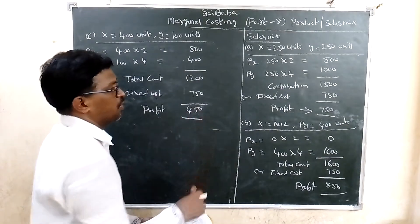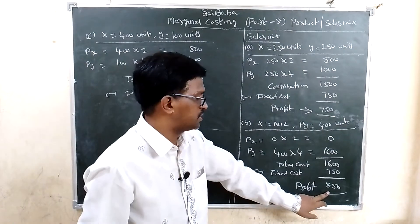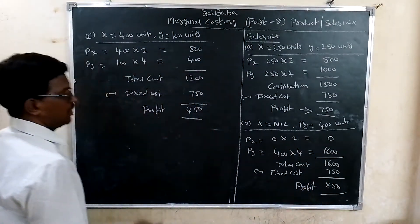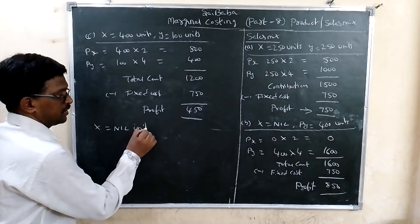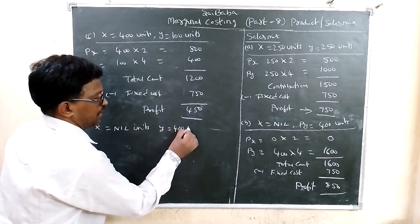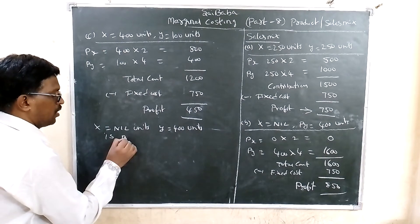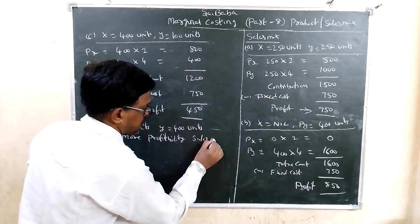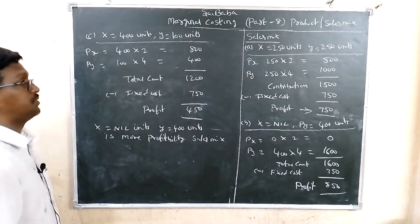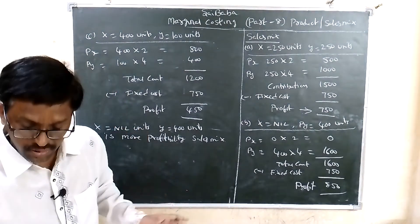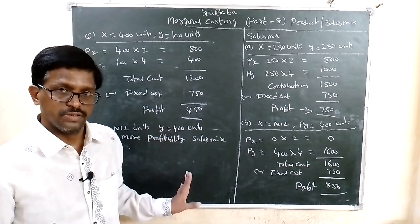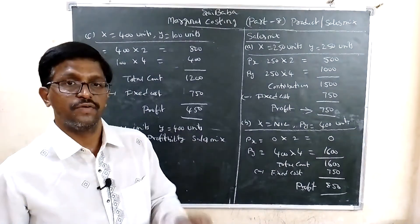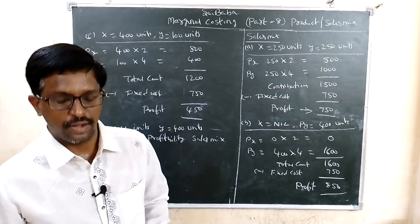Comparing all three: Mix A profit = 750 rupees, Mix B profit = 850 rupees, Mix C profit = 450 rupees. Mix B with 850 rupees is the most profitable, so X = nil units and Y = 400 units is the recommended sales mix. This is the solution. If you like the class, please subscribe to the VDR channel. More problems will be discussed in the next class. Thank you very much.